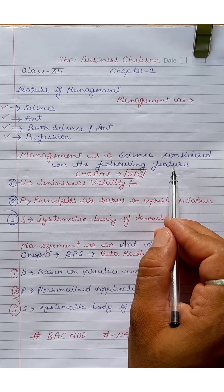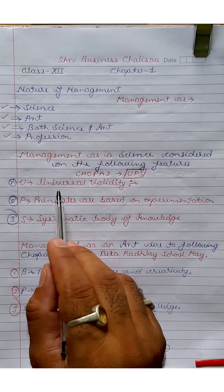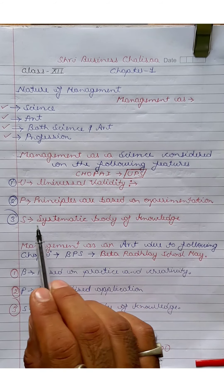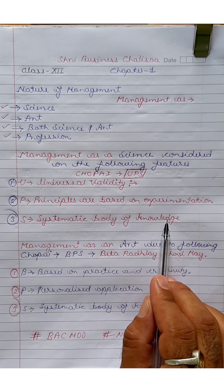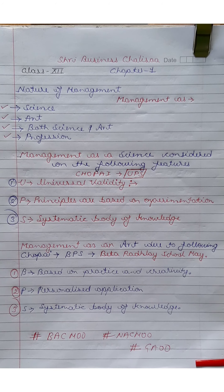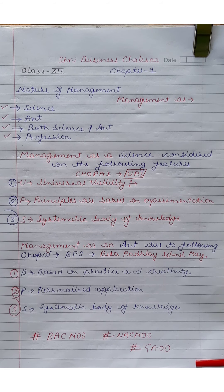UPS — Management is a science. UPS: U is Universal Validity, P is Principle based on Experimentation, S is Systematic Body of Knowledge. What is Universal Validity? It means applicable. Management principles — it is a science because it is not exact, it is universal. Scientific principles are universal but not exact.